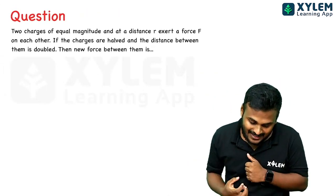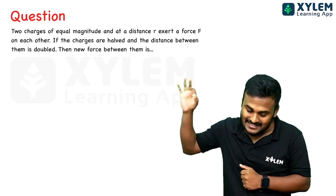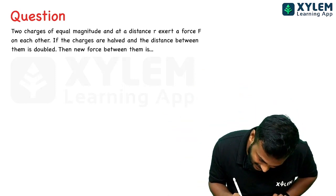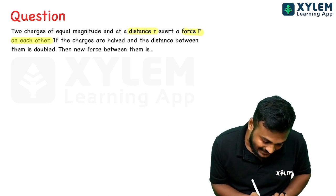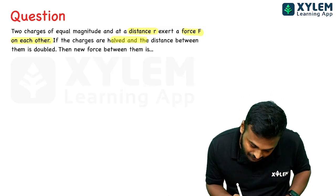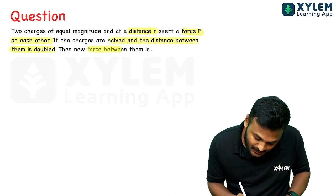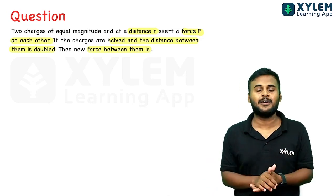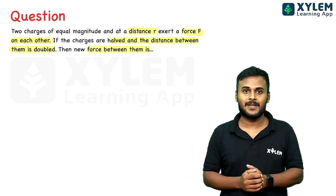Question 1: Two charges of equal magnitude at a distance r exert a force F on each other. If the charges are halved and the distance between them is doubled, then what is the new force between them?